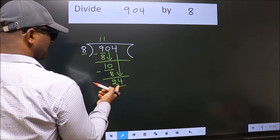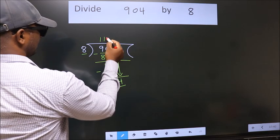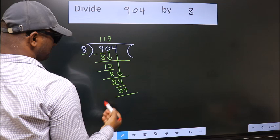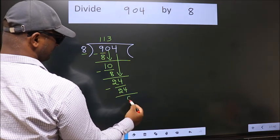When do we get 24 in the 8 table? 8 threes, 24. Now we subtract. We get 0.